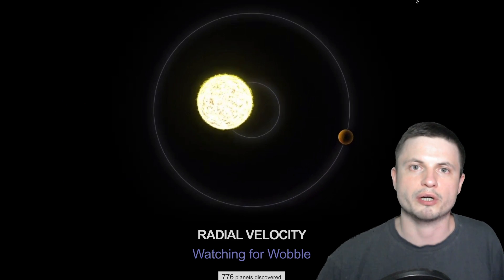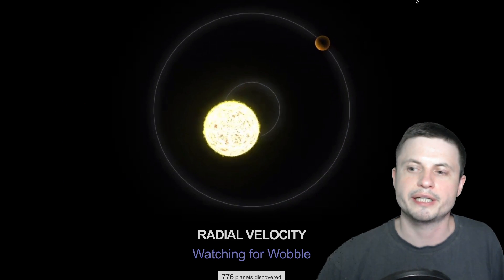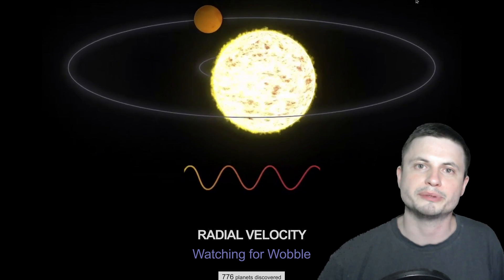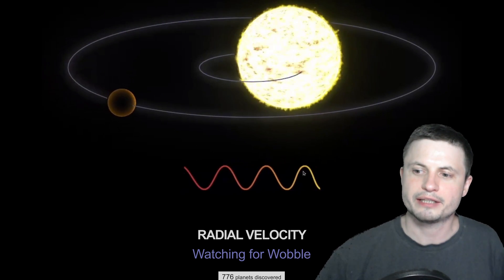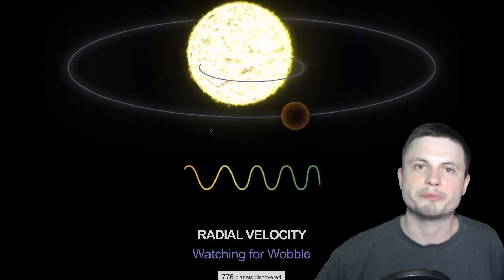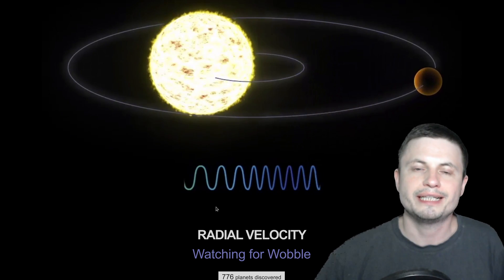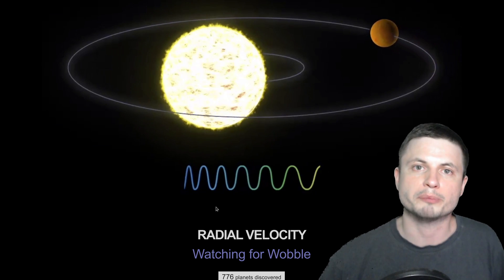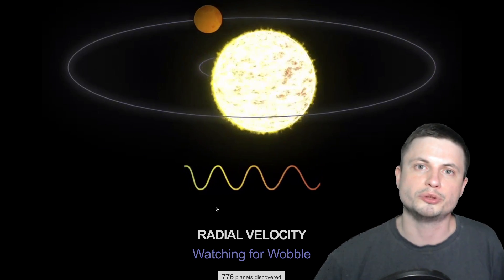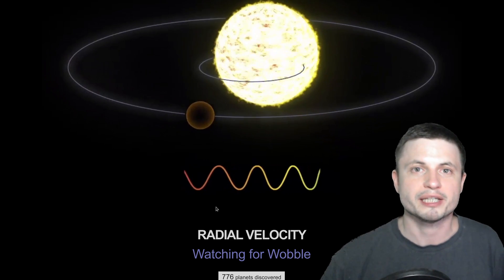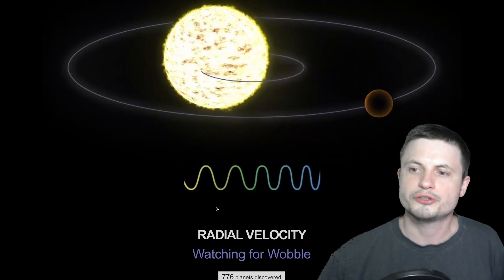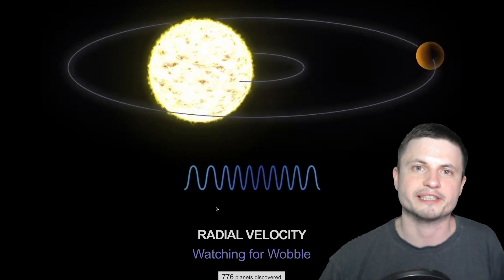The second method that we often use is known as radial velocity and this is when a star and a planet basically pull on each other and you can detect this pull by looking at the spectrum of the star and seeing that it actually has a bit of a Doppler shift, a bit of a redshift, blueshift, redshift, blueshift, which is very periodic and indicates that something really massive orbits around it. This is usually how we find a lot of really massive planets.